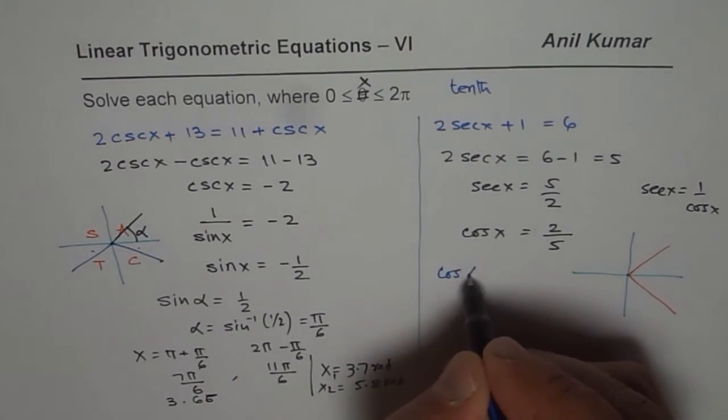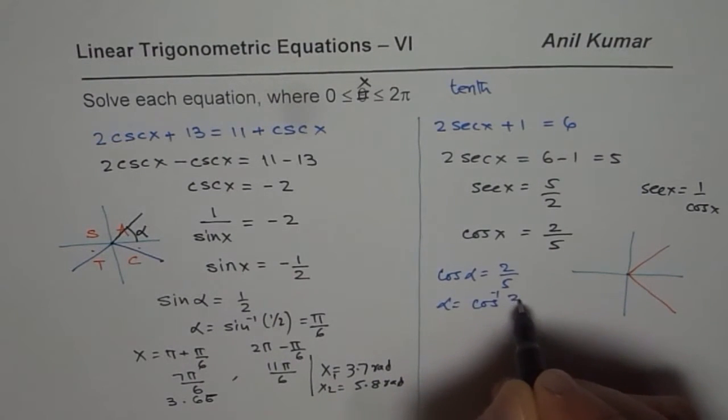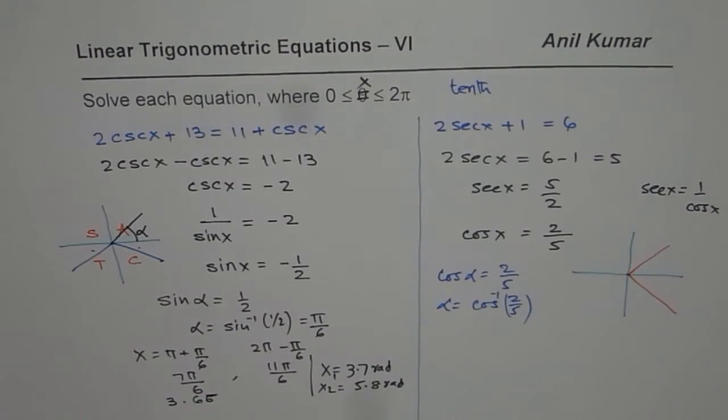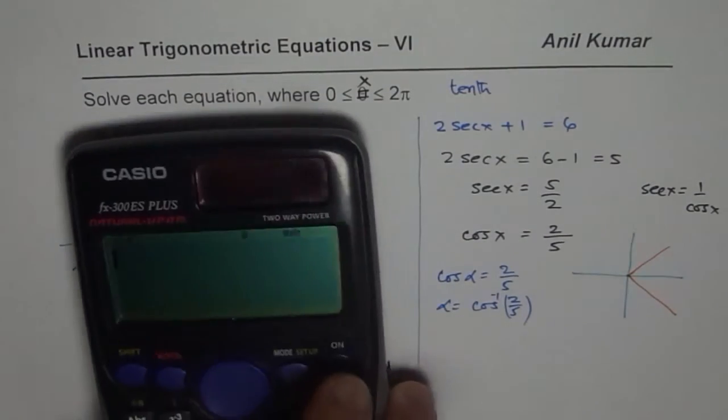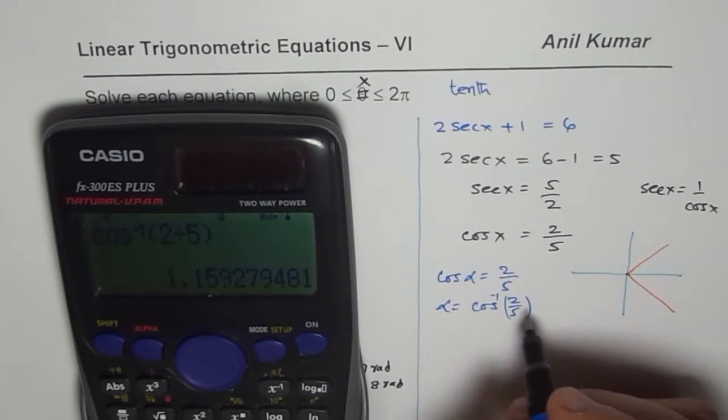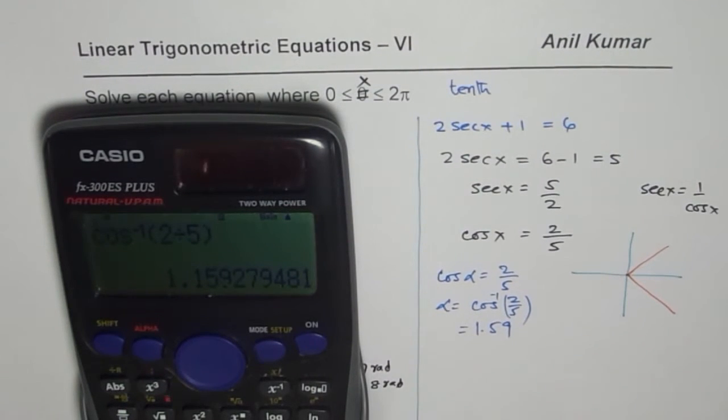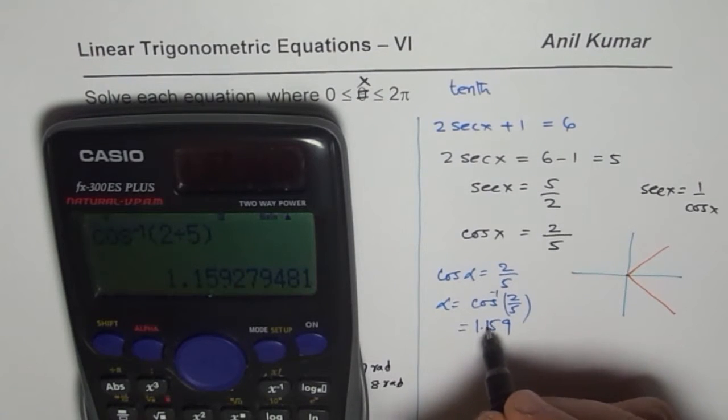Let us first find the acute angle. So we have cos(α) = 2/5. α = cos⁻¹(2/5). Let us use the calculator. So we have cos⁻¹(2/5), which gives us the acute angle α = 1.159.